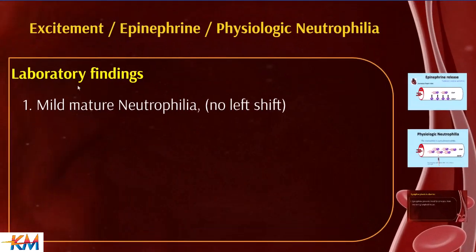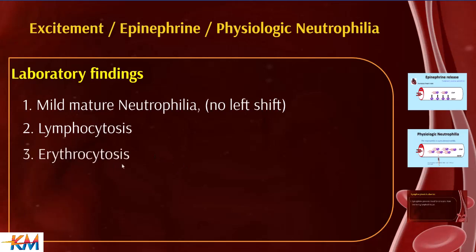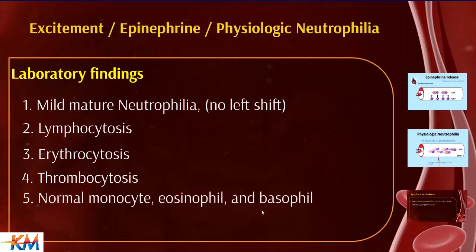The first type is excitement, epinephrine, or physiologic neutrophilia. Laboratory findings include mild mature neutrophilia with no left shift. Because it is mild neutrophilia, there is no need to release immature cells from the bone marrow. Additionally, there is lymphocytosis and erythrocytosis, as well as thrombocytosis. The remaining leukocytes — monocytes, basophils, and eosinophils — are normal.